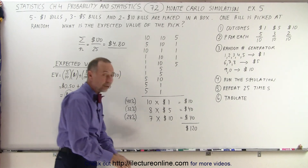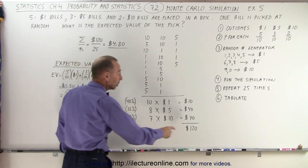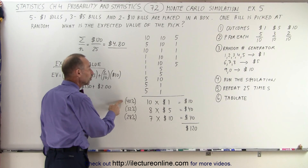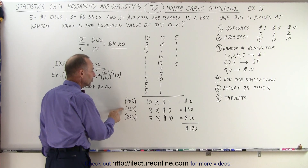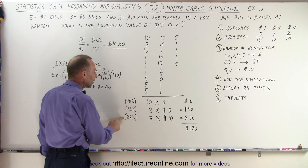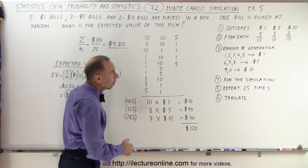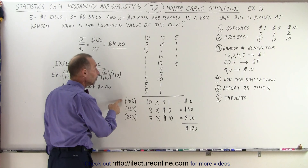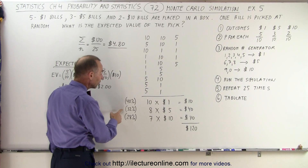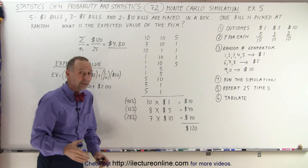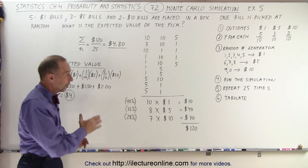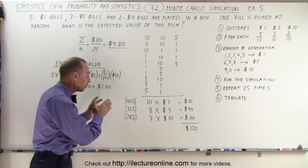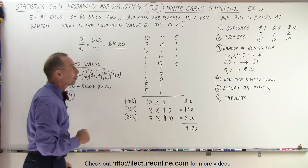When we add up all the money that we pulled out of 25 tries, we ended up pulling out 120 dollars. So 40% of the bills we pulled were one dollar bills, 32% were five dollar bills, and 28% were ten dollar bills. According to the probability, we pulled less one dollar bills, we pulled more five dollar bills, and more ten dollar bills than expected. But again, we only ran the simulation 25 times. If we ran it a thousand times, we'd get a lot closer to that particular probability.